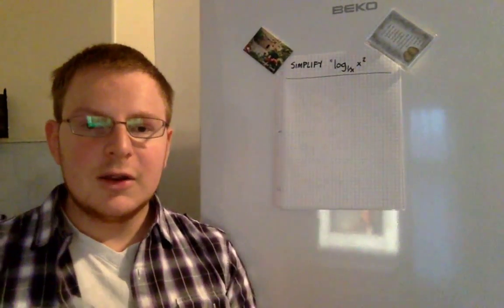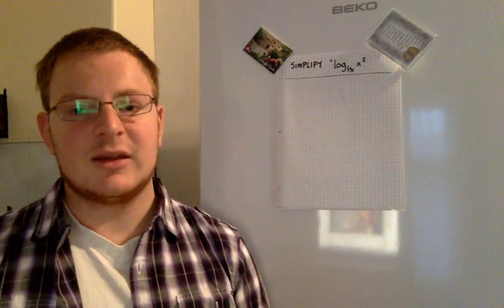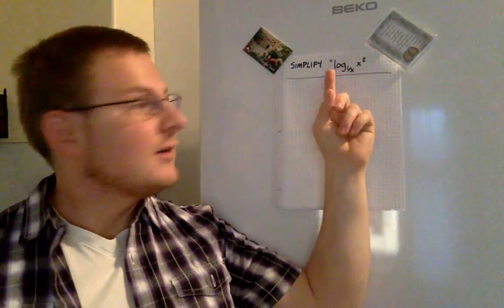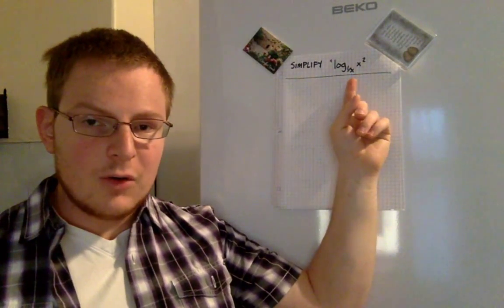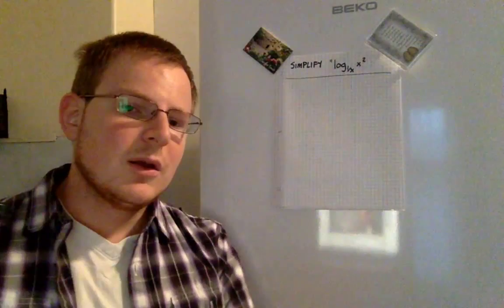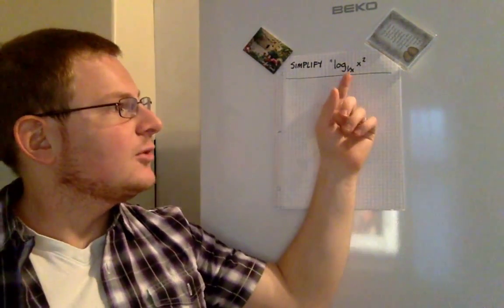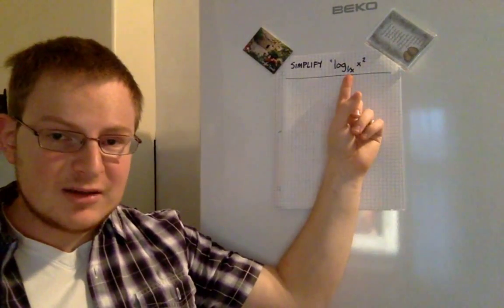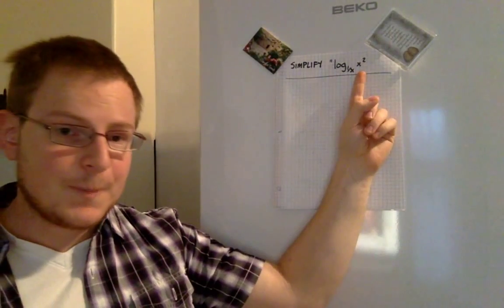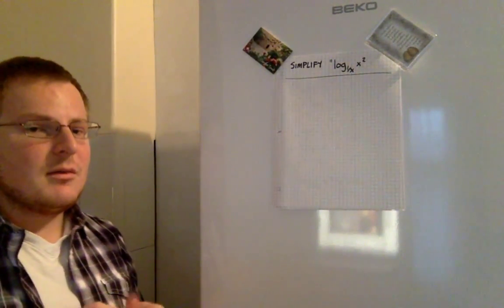Right, well here we are. Today we're going to simplify a logarithmic expression. This one is log to the base 1 over x of x squared. So what this is actually asking us is how many times do we need to multiply this base number here, 1 over x, by itself in order to get x squared.